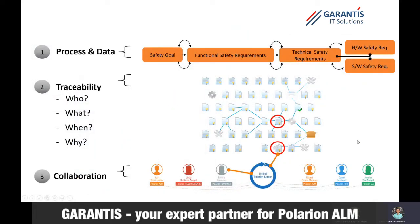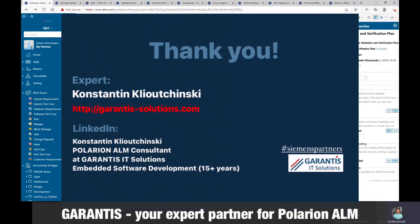Polarion ILM consists of three main items. First, it is processes and data — you can implement different workflows and manage different items. Second, traceability will help you to answer questions: who did something, what they did, when they did, and why. All people from your organization can collaborate in the same tool, and you will always have one point of truth with the latest version of data stored in a central location. Additionally, historical data will be available as well. Now let's switch to Polarion ILM and see how the user interface looks.